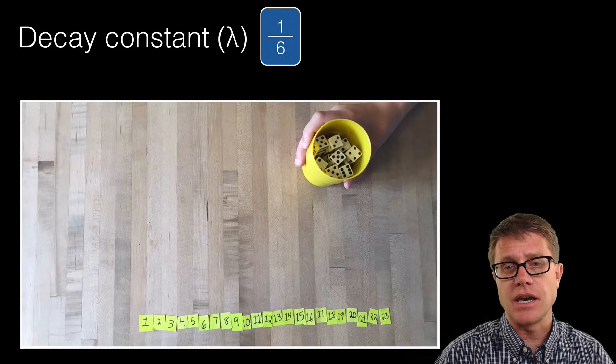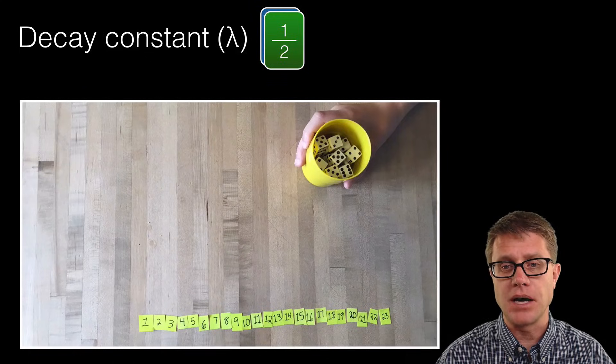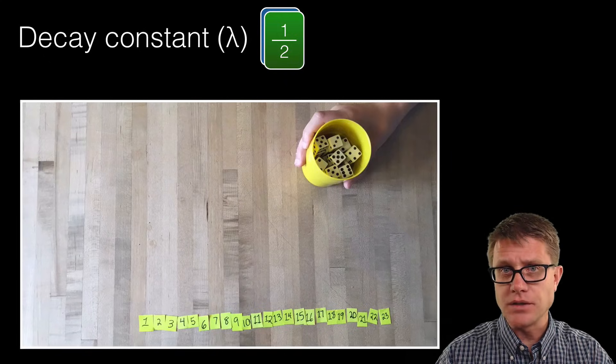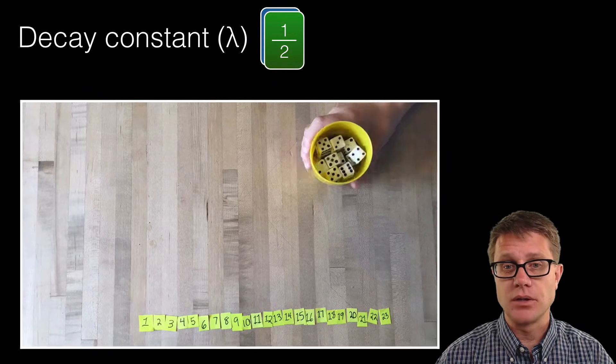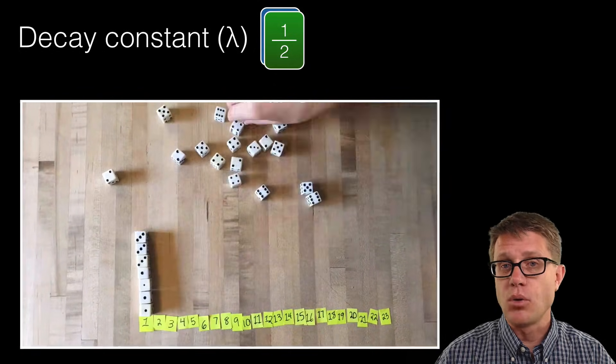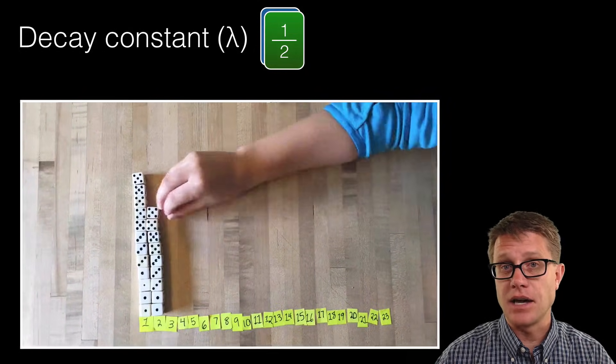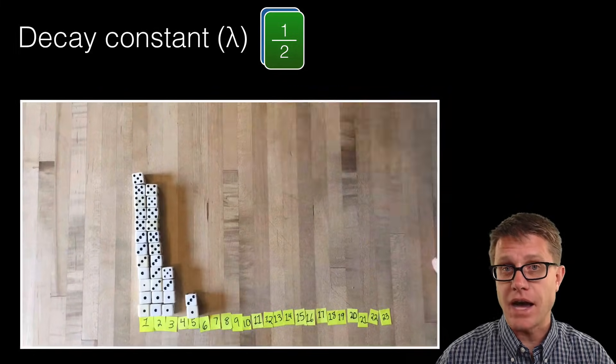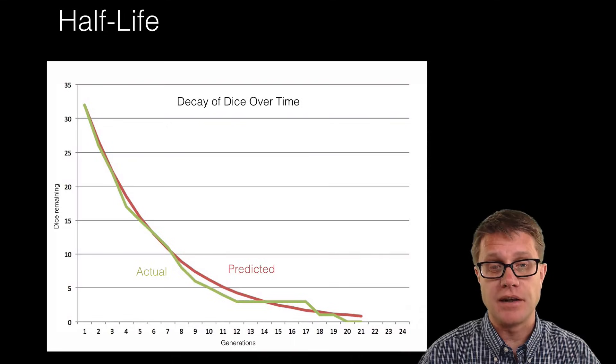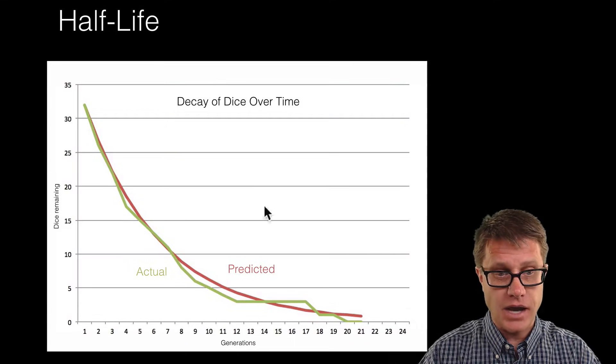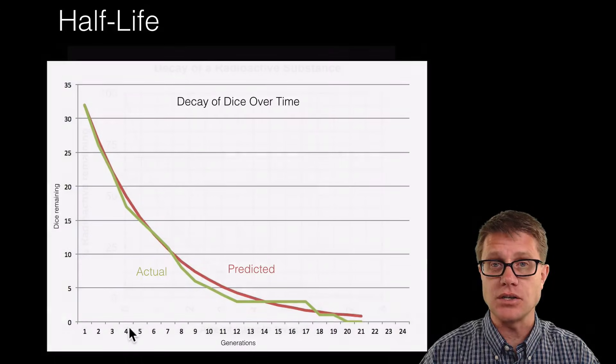What would happen if we changed the decay constant? What if we changed it from 1/6 to 1/2? How would you do that in the modeling? Instead of pulling 1s out, she is going to pull the 1s, 3s, and 5s out. So what is going to happen? Well, it is going to happen more quickly. More of them are going to decay at each point, so it is going to take less time for all of them to decay. In other words, our half-life has gotten much shorter. You should be able to calculate half-life. How long would it be for half of them to decay? You can see it is going to be somewhere around 4 generations.